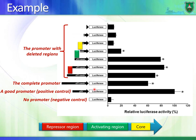Now, to know which regions are important for transcription, we start chopping off the promoter — deleting sequences portion by portion. Notice that the repressor region is located in a specific area. If I remove part of it, there is little increase, hardly any difference. But if I remove the whole repressor region, there is a large increase in luciferase production. This increase tells me there is a repressor region located in that part, because I know exactly what I'm cutting from the promoter.